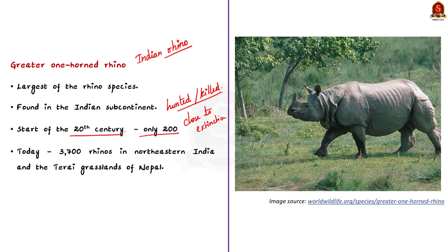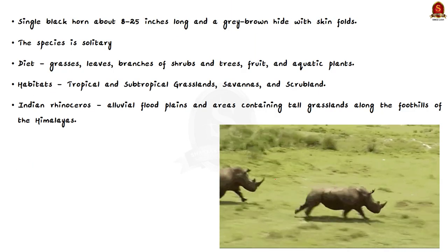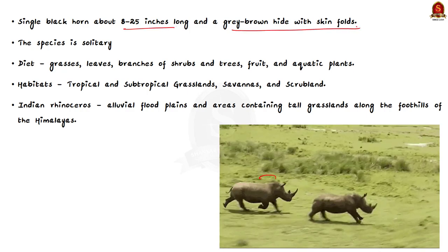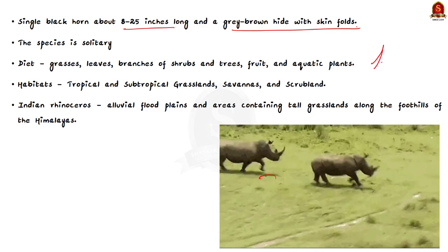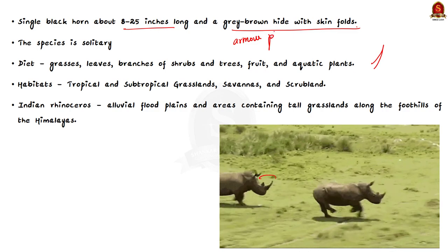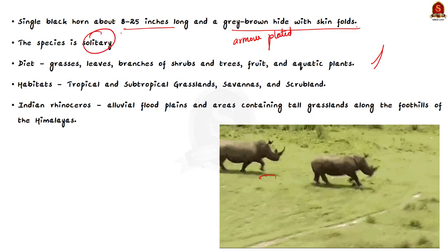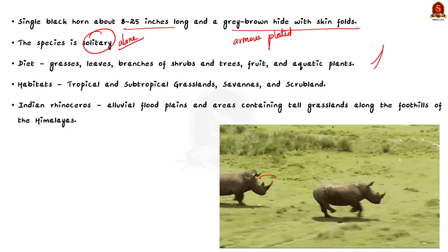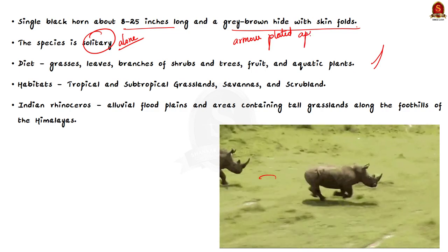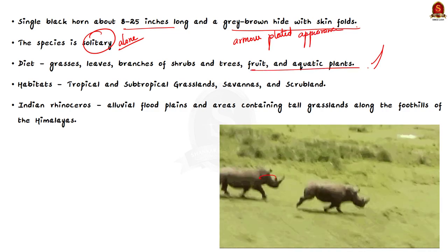The recovery of the greater one-horned rhino is among the greatest conservation success stories in Asia. Thanks to strict protection and management from Indian and Nepalese wildlife authorities, the greater one-horned rhino was brought back from the brink of extinction. Today the population has increased to around 3,700 rhinos in northeastern India and the Terai grasslands of Nepal. The greater one-horned rhino is identified by a single black horn about 8 to 25 inches long and a grey-brown hide with skin folds, giving rhinos an armor-plated appearance. They primarily graze with a diet consisting almost entirely of grasses as well as leaves, branches of shrubs and trees, fruits and aquatic plants.